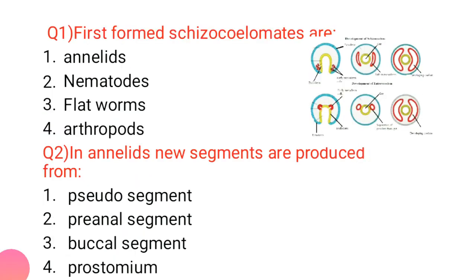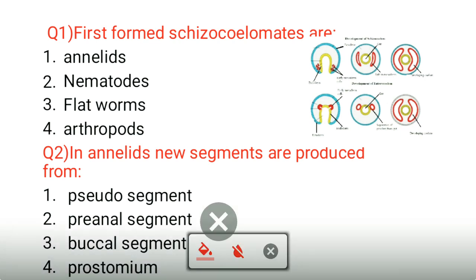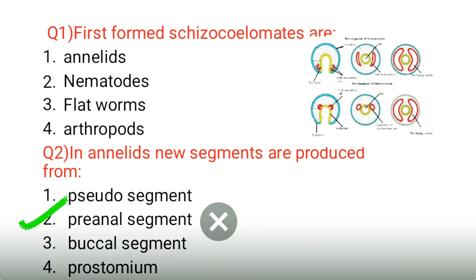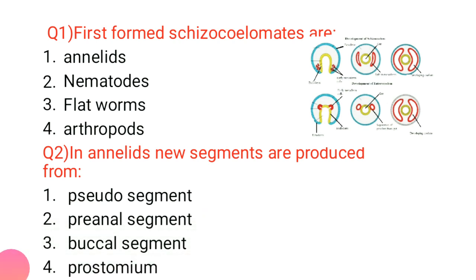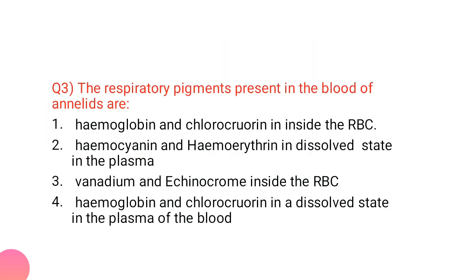Second question: in annelids, new segments are produced from the pre-anal segments — the segments just before the anal segment are the ones that give rise to new segments.